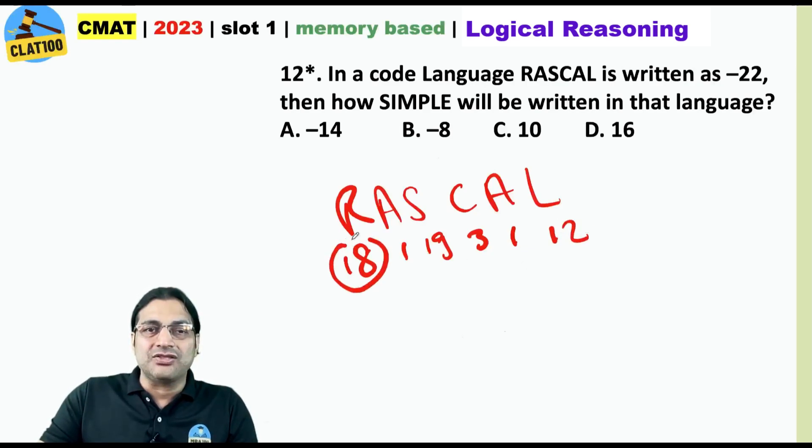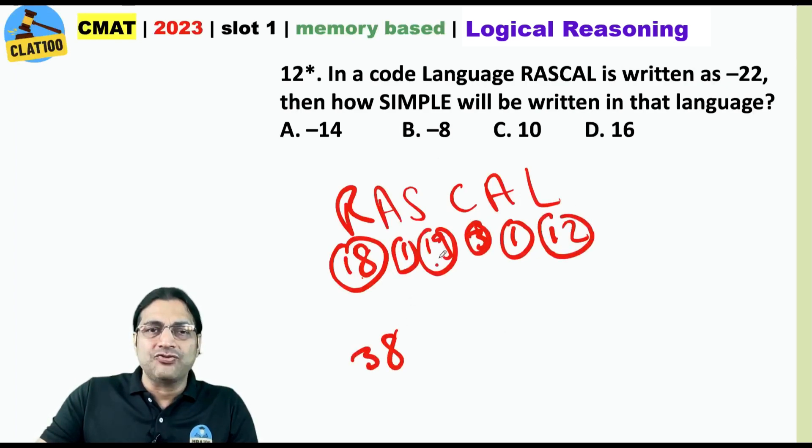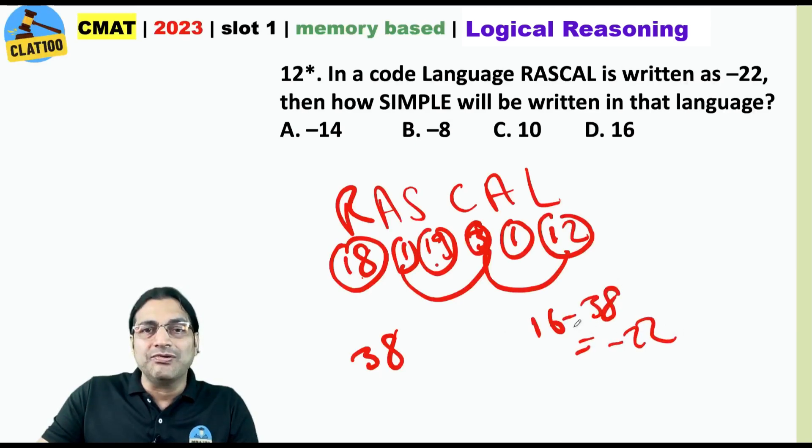And take the sum. 18 plus 19 plus 1, 38, 1, 3 and 12, 1, 3 and 12, 16. Again, 16 minus 38 is minus 22. So, you could get minus 22 from this rascal in two ways.